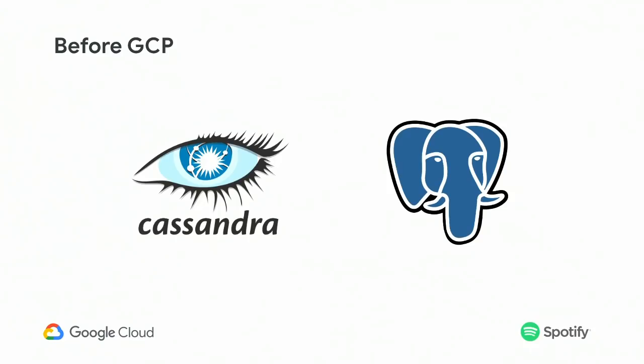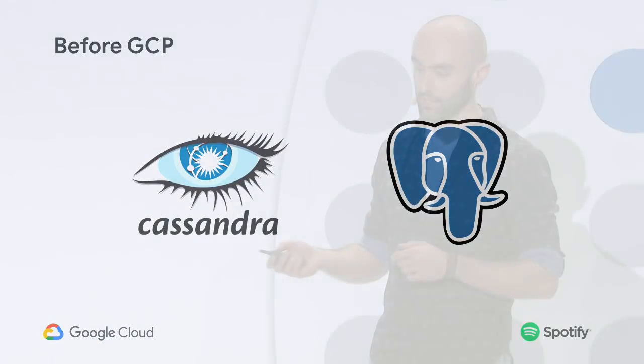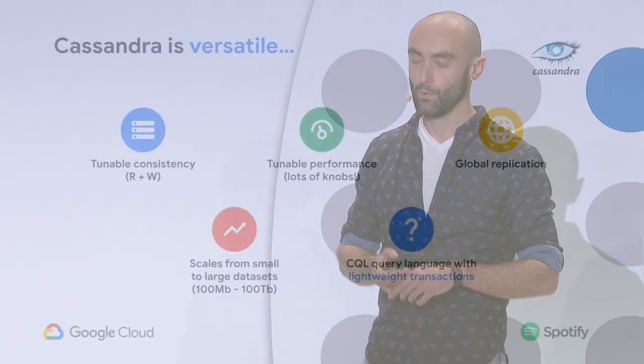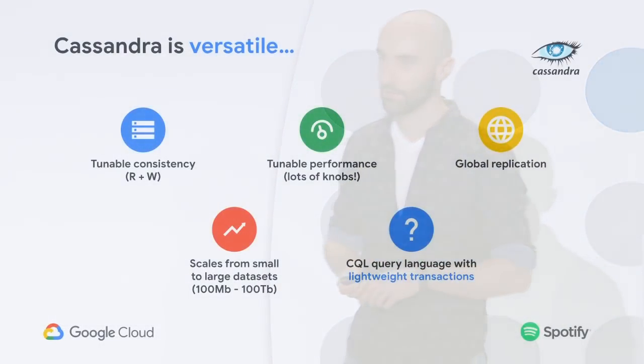We had Cassandra and Postgres, which means we also managed our own databases, not just the machines. In this talk, I'm going to focus quite a lot on Cassandra, because it became extremely popular at Spotify. I'm going to start telling you why it became so popular.